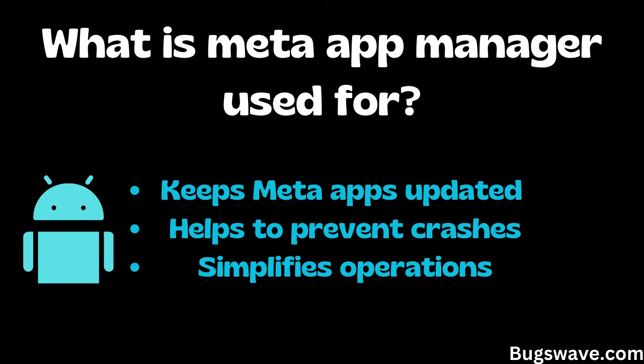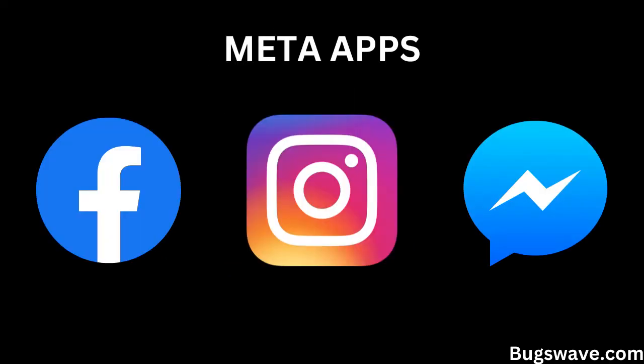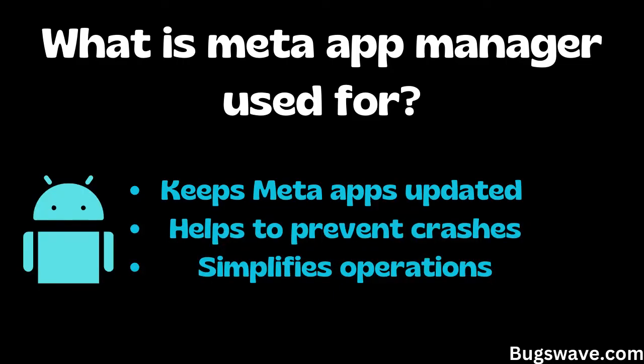What is Meta App Manager used for? Here are some of the main functions. First, it keeps Meta apps updated — the app automatically checks for and installs updates to Meta's apps. It also helps prevent system crashes by sending alerts to Meta, so developers can issue patches and fixes. Additionally, these system apps simplify operations like updating and checking for crashes, helping maintain the overall user experience.